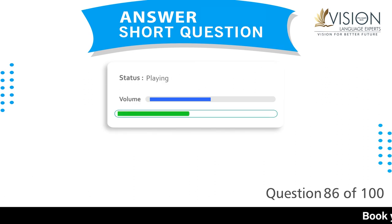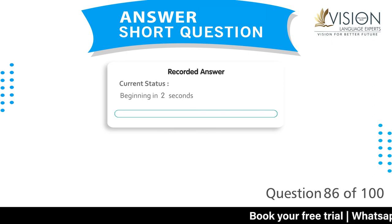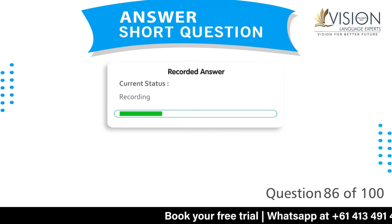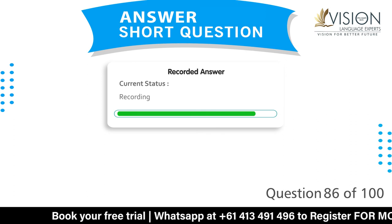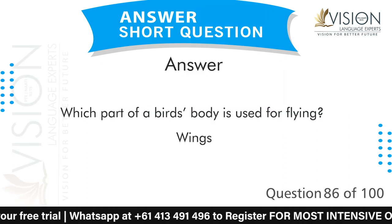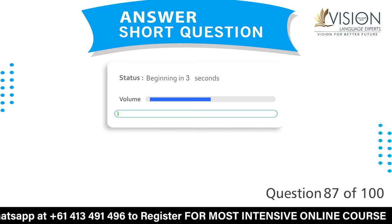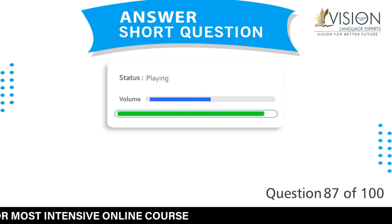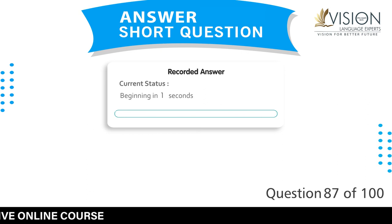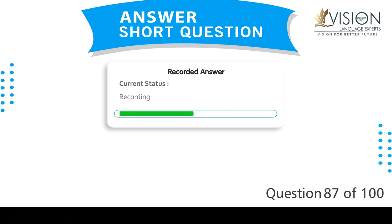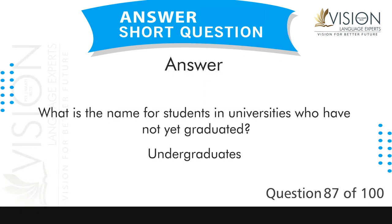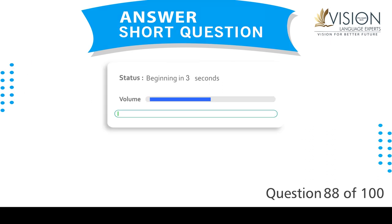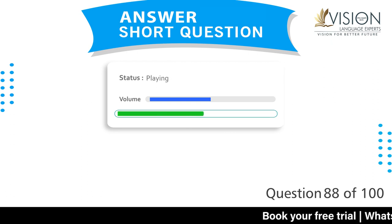Which part of a bird's body is used for flying? Wings. What is the name for students in universities who have not yet graduated? Undergraduates. When you have the primary and the secondary, what do you have next? Tertiary.